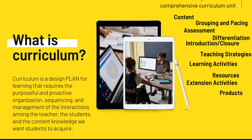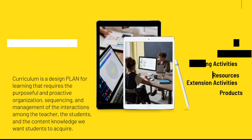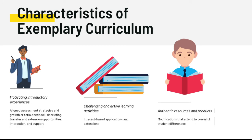Some of the components of a comprehensive curriculum unit include content, grouping and basing assessment, differentiation, introduction or closure, teaching strategies, learning activities, resources, extension activities, and products. Characteristics of exemplary curriculum include: motivating introductory experiences, aligned assessment strategies and growth criteria, feedback, debriefing, transfer and extension opportunities, interaction and support, challenging and active learning activities, interest-based applications and extensions, and authentic resources and products.